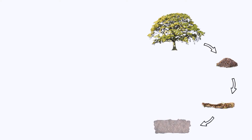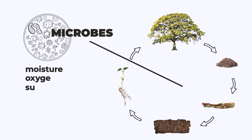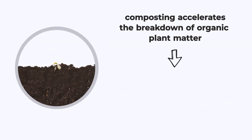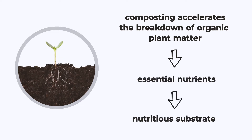Composting is the natural process of recycling organic matter. It occurs through microbes in the soil that eat the material. Other factors like moisture, oxygen, sunlight, and temperature set up the right environment for this process to occur. Composting accelerates the breakdown of organic matter into essential nutrients that form a nutritious substrate for plants to grow.